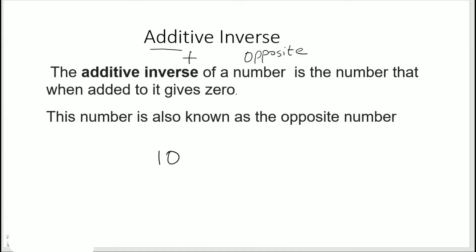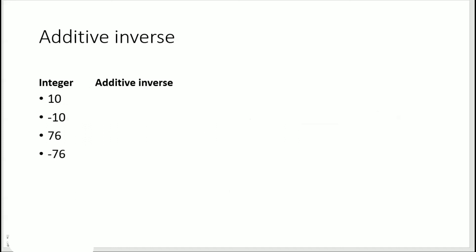So I need to add a number here so that I get a zero. Now this number here would be the additive inverse or the opposite number, and that would be minus 10. So let's see the examples here. We have already done 10, so the additive inverse of 10 is minus 10.